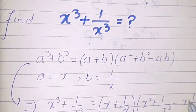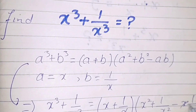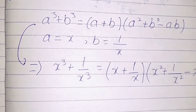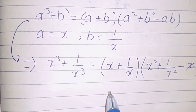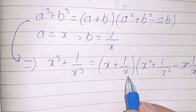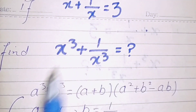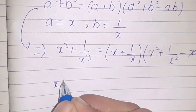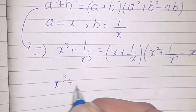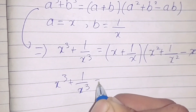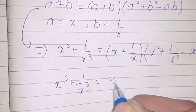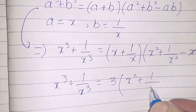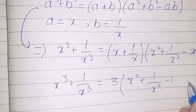x and 1 by x will be cancelled, so we have minus 1 only. It is given that x plus 1 by x is equal to 3. So it becomes x cubed plus 1 by x cubed is equal to 3 into x squared plus 1 by x squared minus 1.